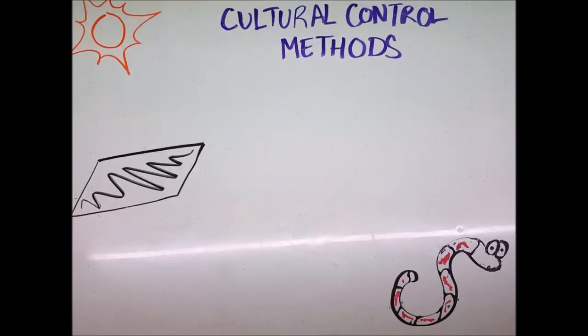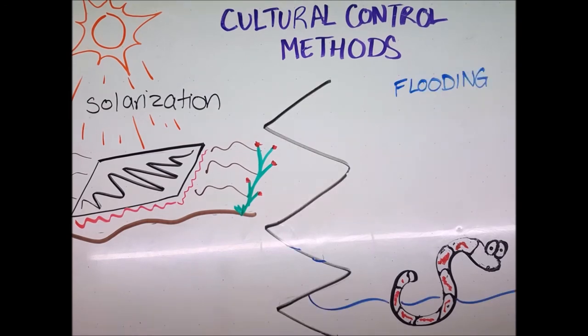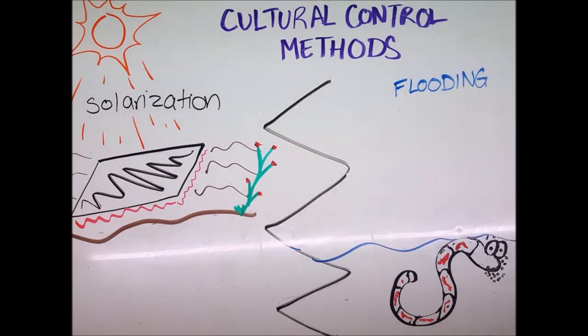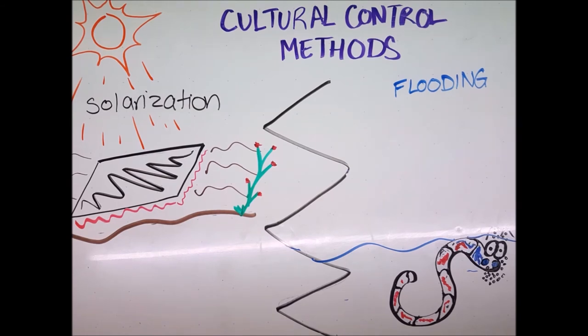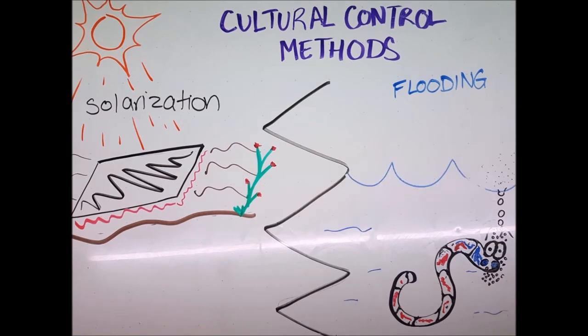Solarization can be used but does not completely control the population because it is not lethal at depths greater than 30 centimeters. Flooding is another option, but consider flooding for 7 to 9 months which kills nematodes by making the soil anaerobic, depleting the soil of its oxygen. By doing this, you are suffocating the nematodes and increasing the concentration of naturally occurring organic acids, methane and hydrogen sulfides.